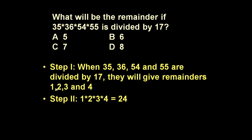In step 2, you just multiply these 4 remainders: 1, 2, 3, 4. You just multiply them. It is equal to 24.